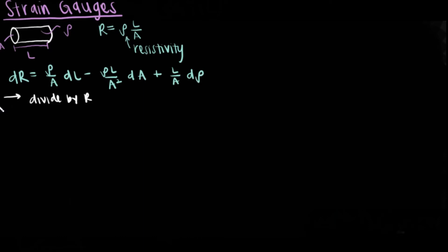This can be rewritten by dividing everything by r to get change in resistance divided by resistance is equal to change in length divided by length minus change in area divided by area plus change in resistivity divided by resistivity.